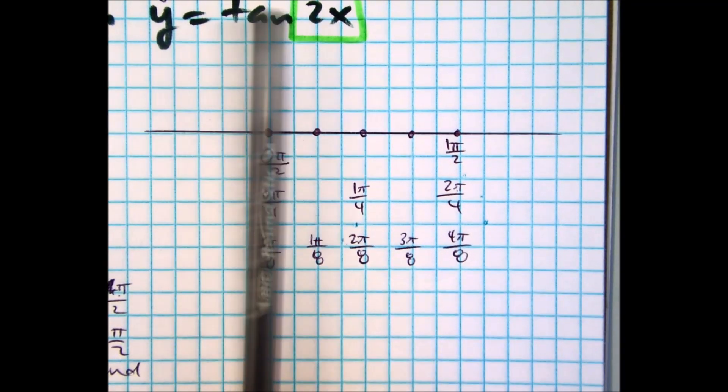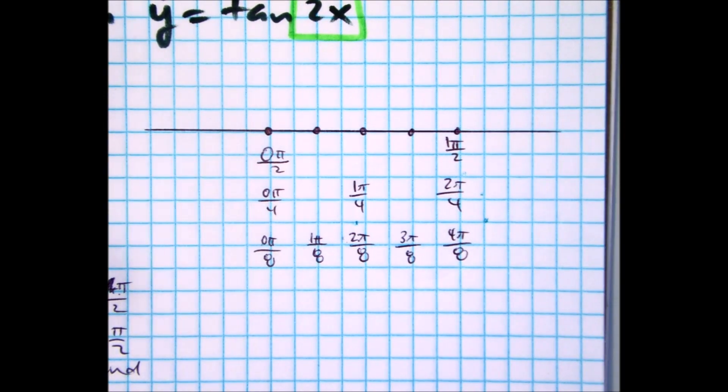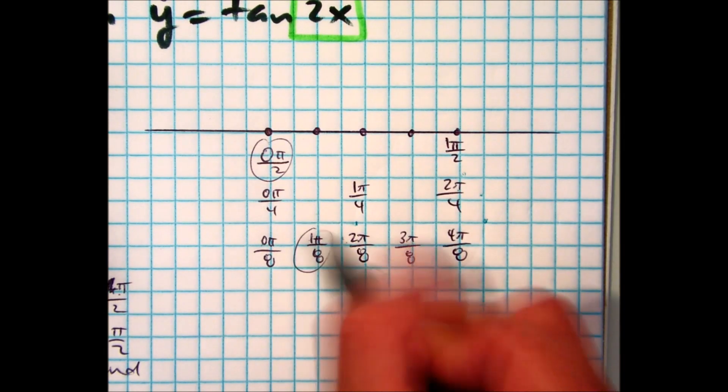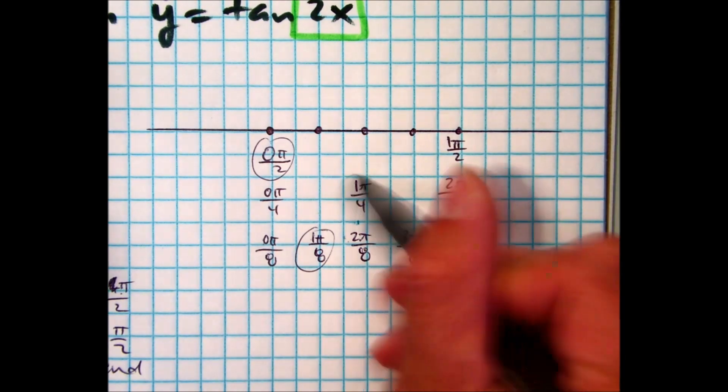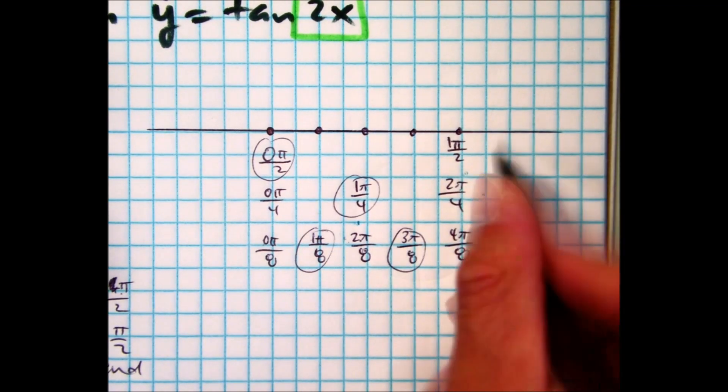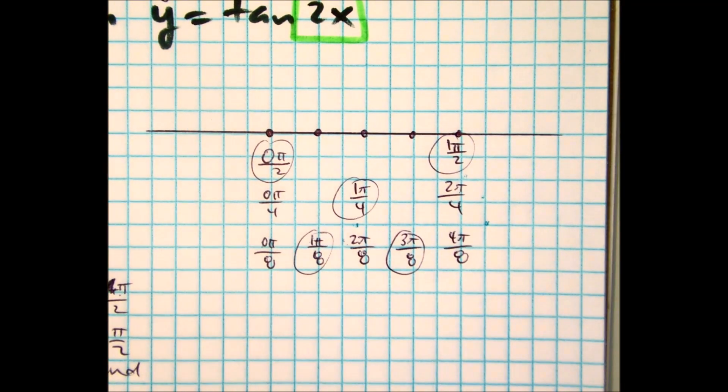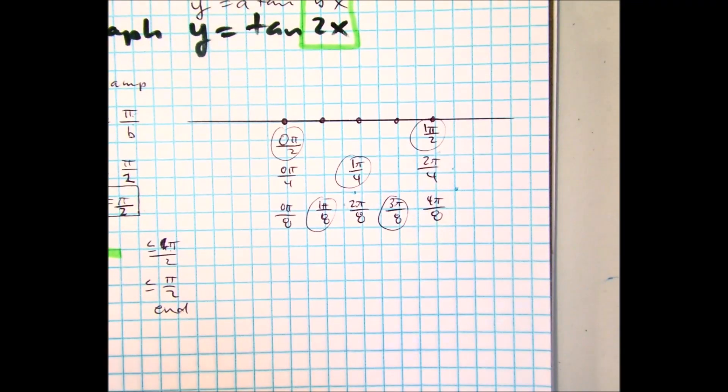So you can see all the equivalent fractions. And you can go back and just circle the ones we actually need. So we're still at 0, 1 pi over 8, reduced, reduced, and reduced. And those are my 5 x values. Let's write down those 5 x values to help me get my 5 points that I need.